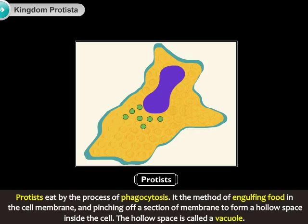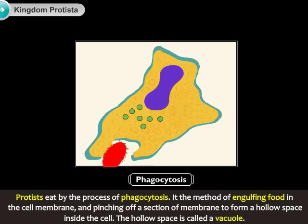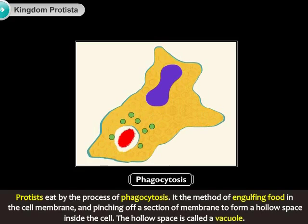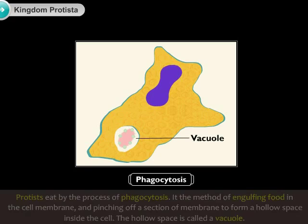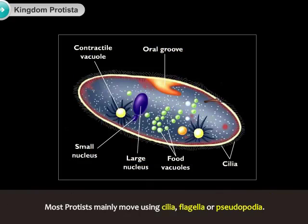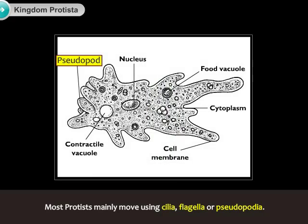Protists eat by the process of phagocytosis. It is the method of engulfing food in the cell membrane and pinching off a section of membrane to form a hollow space inside the cell. The hollow space is called a vacuole. Most protists mainly move using cilia, flagella, or pseudopodia.